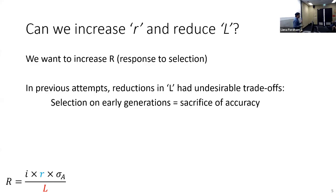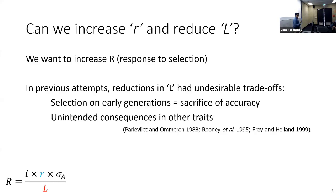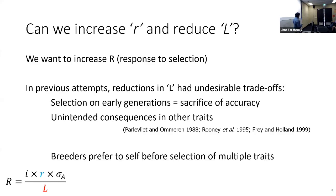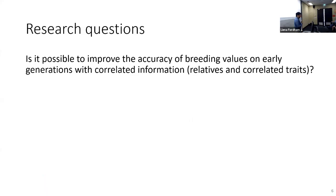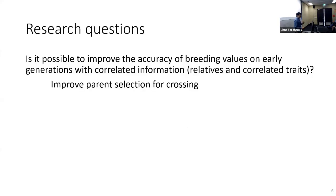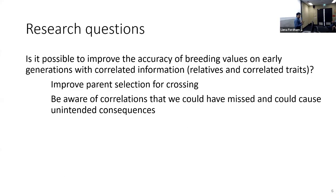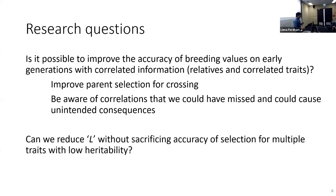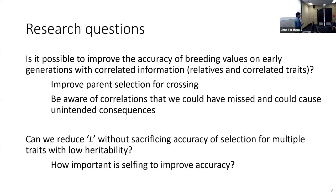Previous research shows that while they were able to improve the target trait, they met unintended consequences on other important traits. So in the end, breeders prefer to self before selection of multiple traits. I want to know if it's possible to improve the accuracy of breeding values in early generations by using improved statistical models with correlated information from relatives and correlated traits. I want to improve parent selection for crossing, and I want to be aware of correlations between traits that could cause unintended consequences. Can we reduce cycle length without sacrificing accuracy, and how important is selfing to improve accuracy?